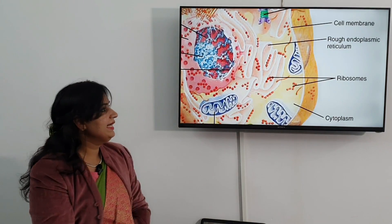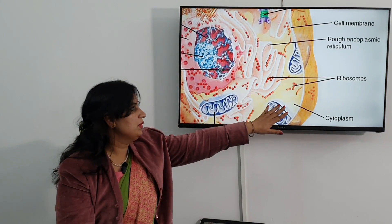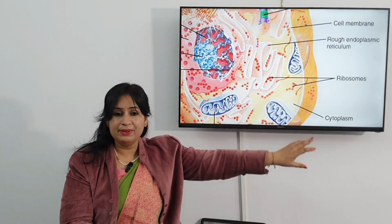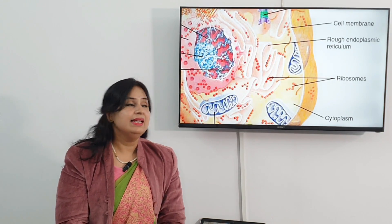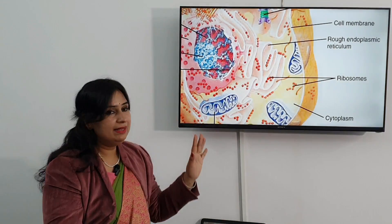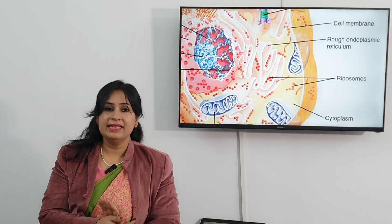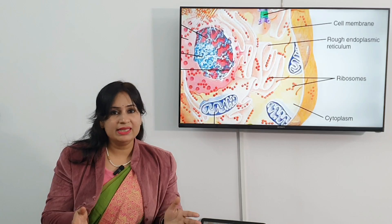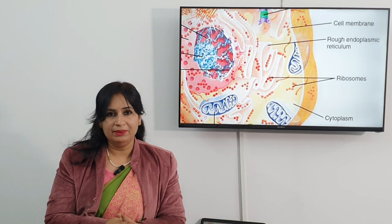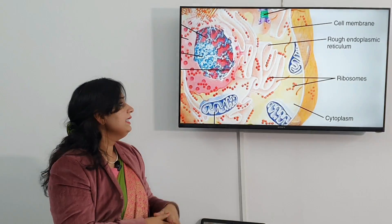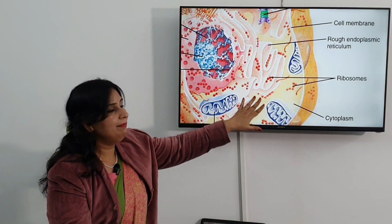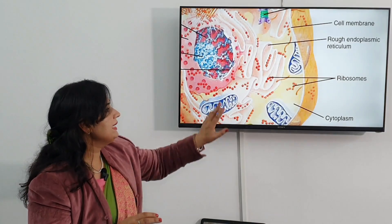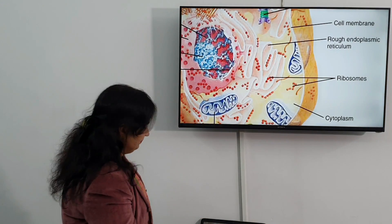Here we can see ribosomes — these are granular structures present in the cell that help in the synthesis of proteins. Proteins are a very important part of the cell, so ribosomes help in the synthesis of proteins in the cell.